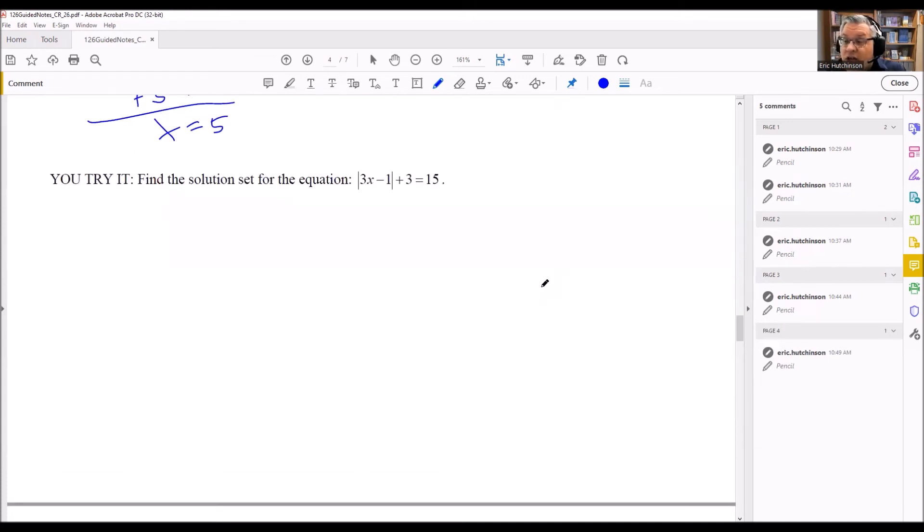And now here's the last case that you would have. So 3x minus 1 plus 3 equals 15. So again, we're subtracting the 3 first. You have to do that step to isolate the absolute value. So now if you've got an absolute value equal to a positive number, you're going to get two solutions.